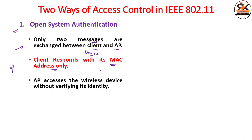In open system authentication, the client sends its MAC address to the access point, and the access point grants access to the wireless device without verifying its identity. Because it does not verify identity, an attacker could also connect. That is not the default case — by default we always keep some key.